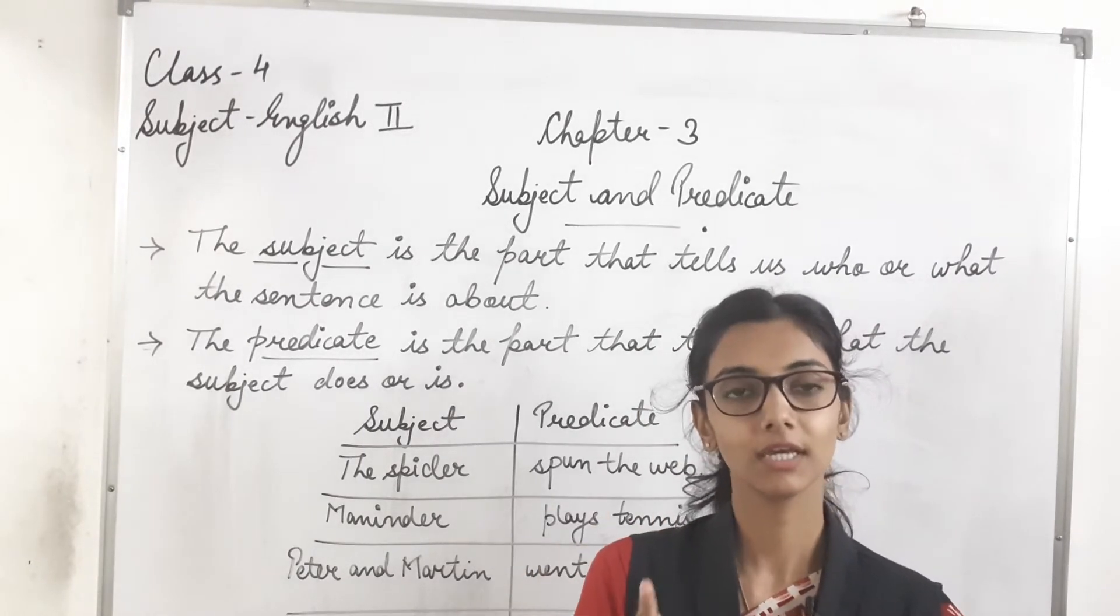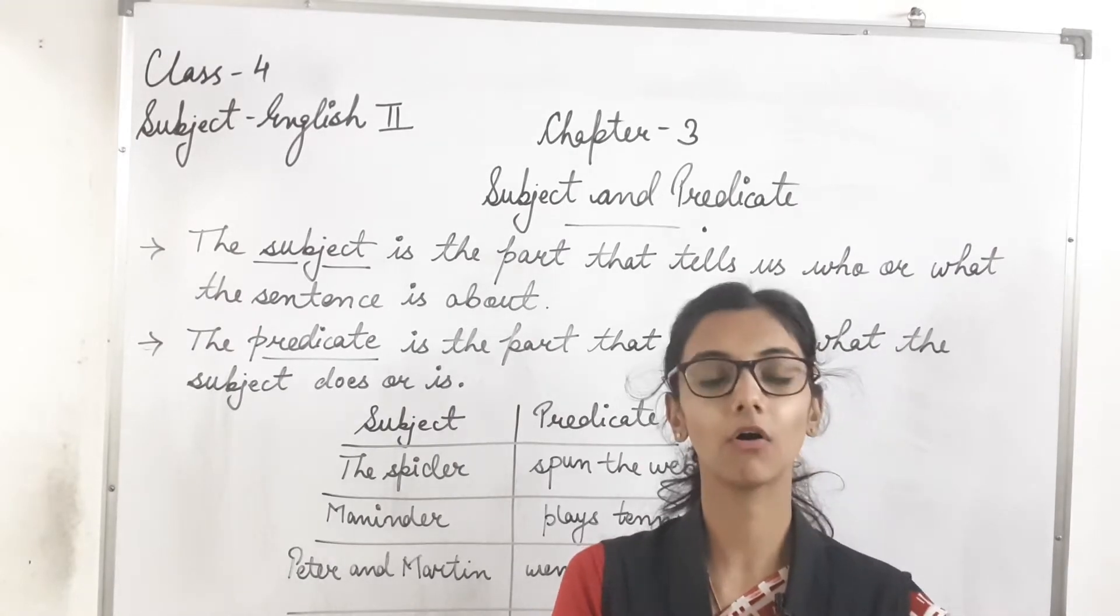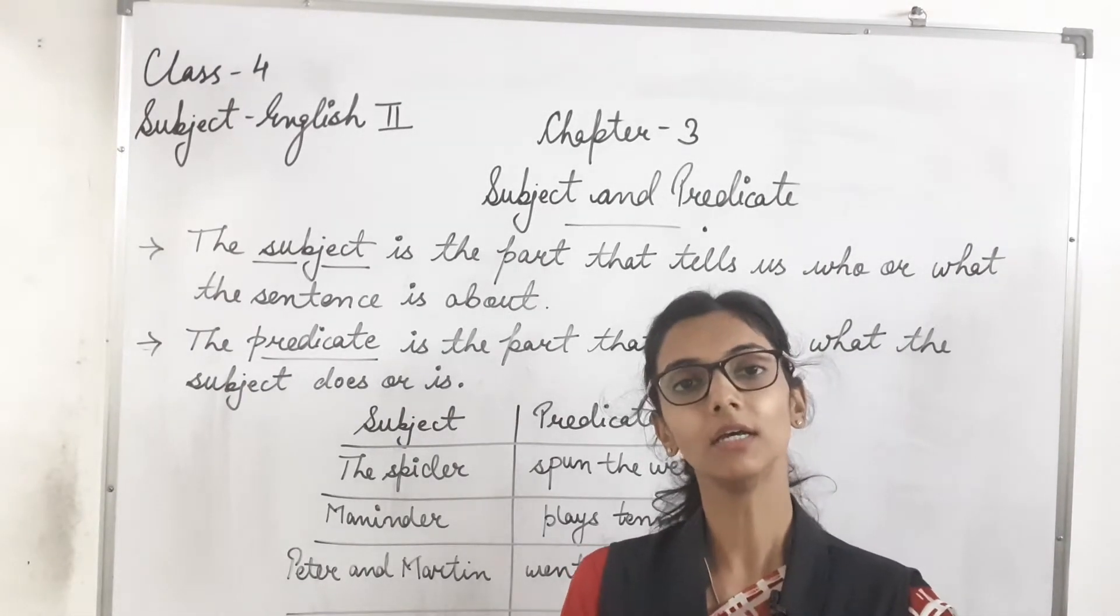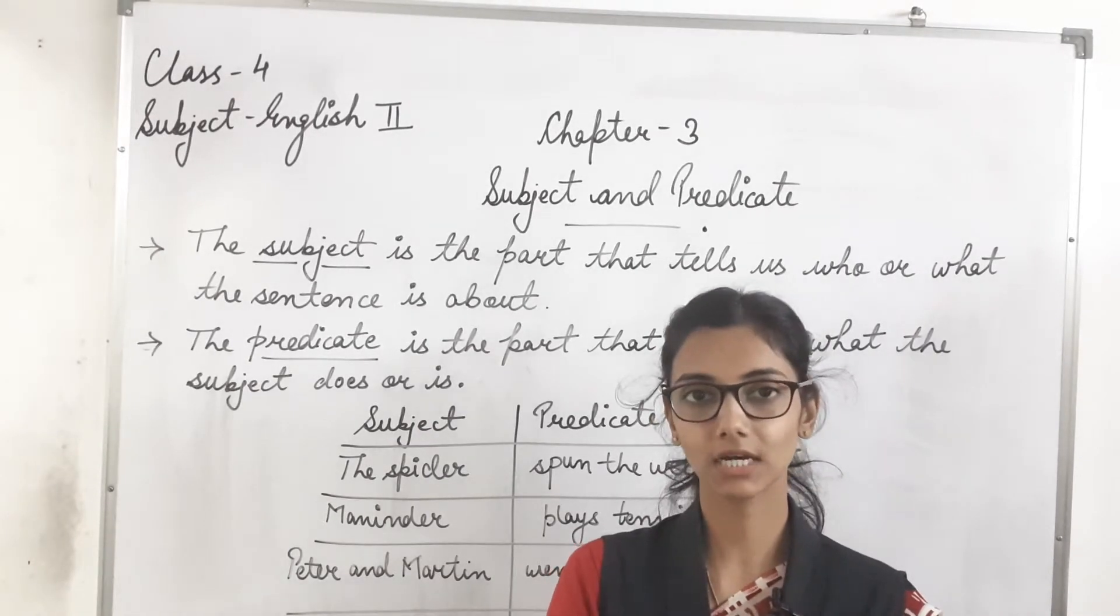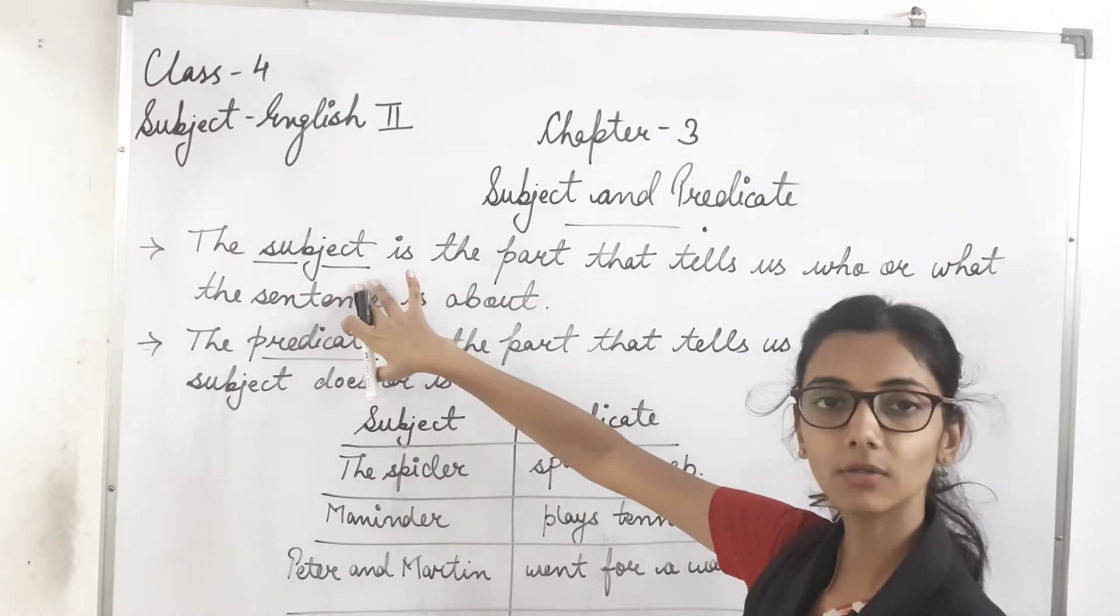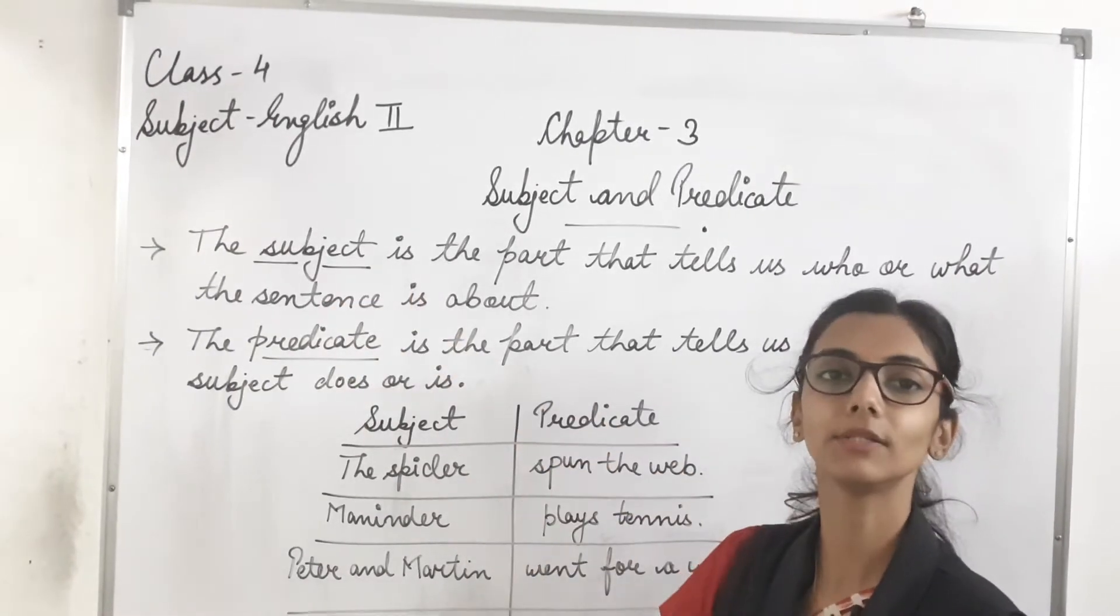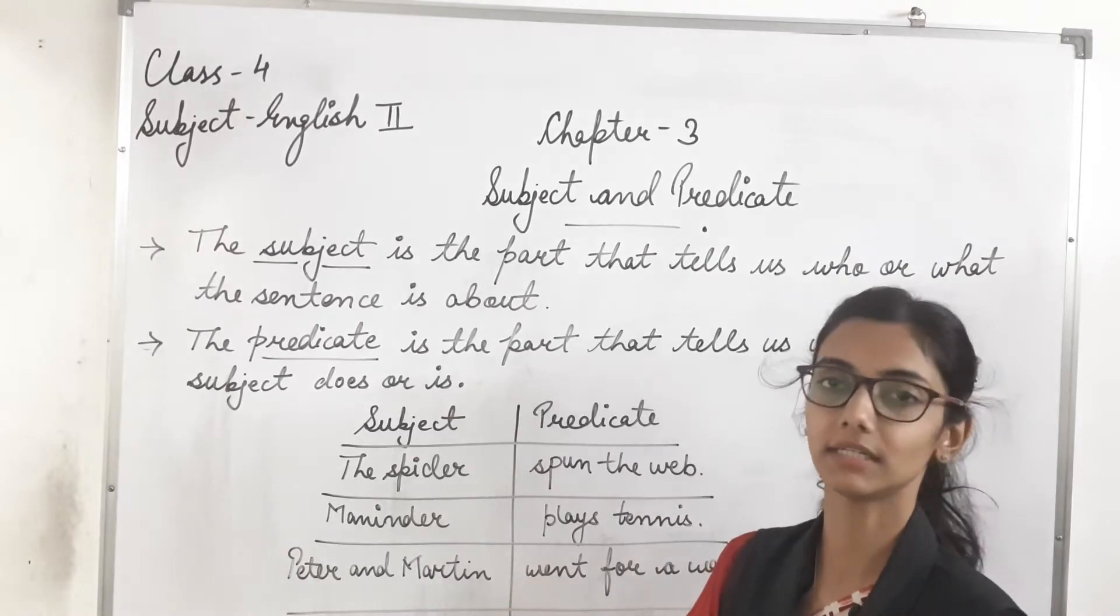To us sentence mein doh cheeze hoti hain. Eek toh jis ke baare mein baat hori hain us sentence mein. Or dousari kya hoti hain? Kya us sentence mein kya ho raha hai? Toh woh douno cheeze kya hoti hain? Pahali toh hoti hain subject. Subject kya hoti hain? Jis ke baare mein baat hori hain us sentence mein. Jho sentence ka main character hain.